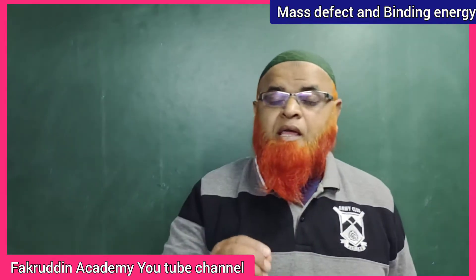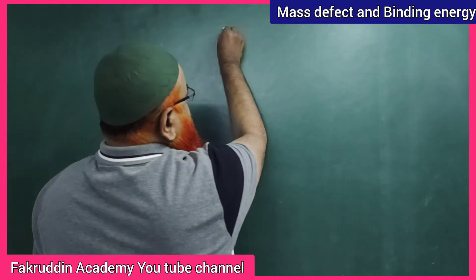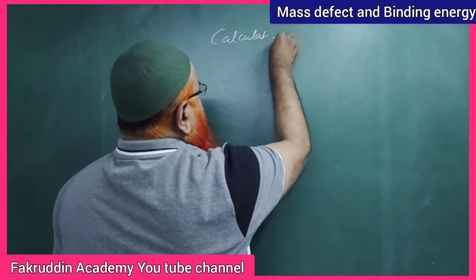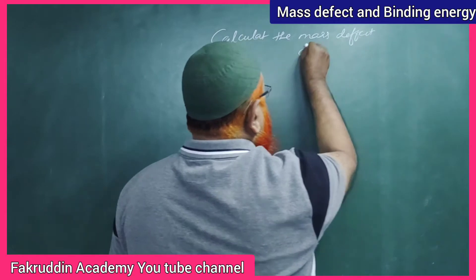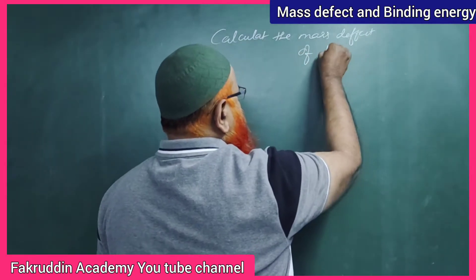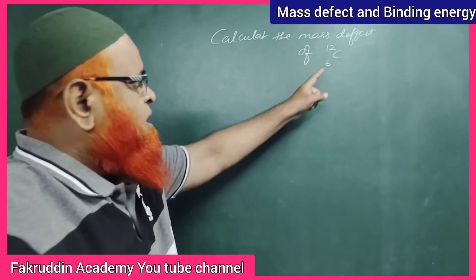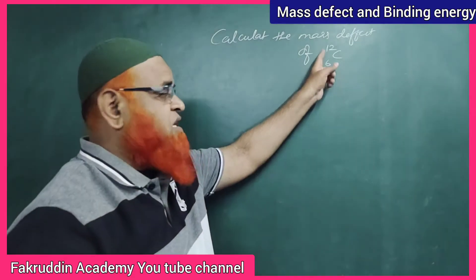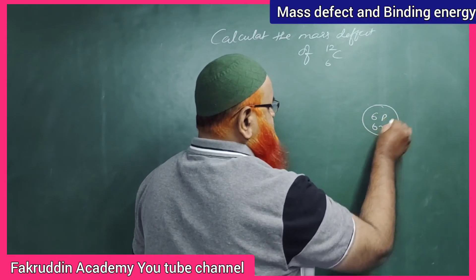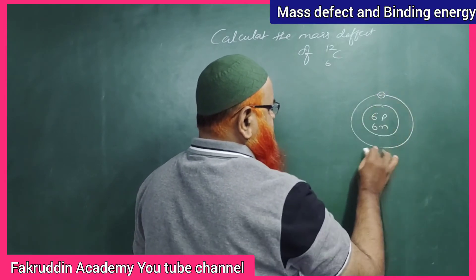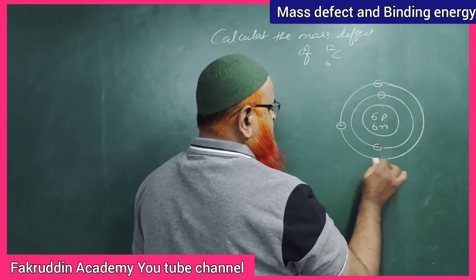Today we will discuss a very useful and amazing topic called mass defect. Let us take an example: calculate the mass defect of carbon C-6-12. Carbon has atomic number 6 and mass number 12. If you draw a carbon atom, it has six protons, six neutrons, two electrons in the first orbit, and four electrons in the second orbit.